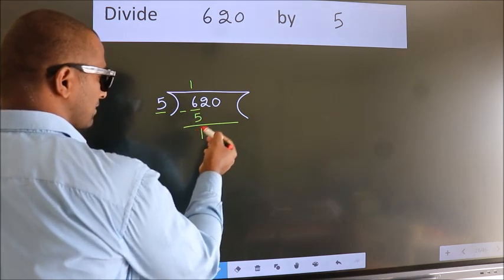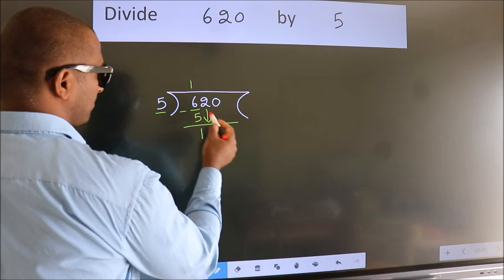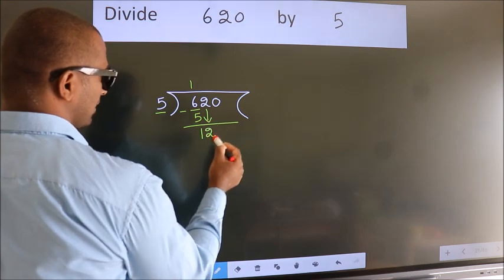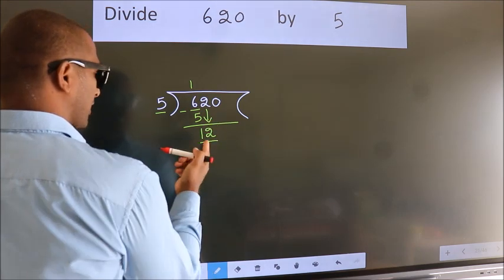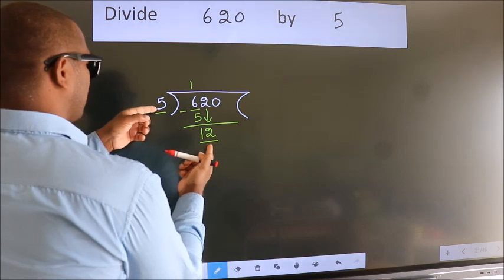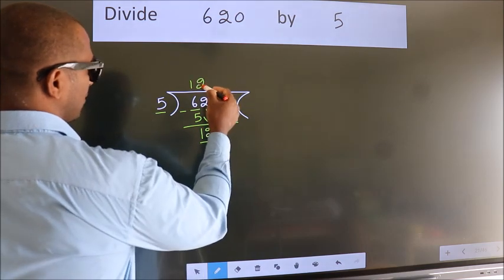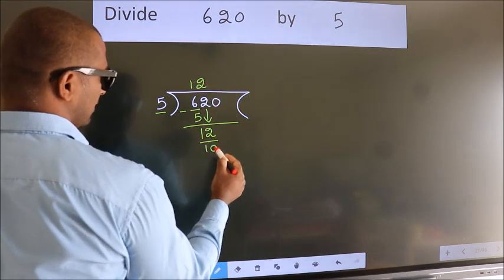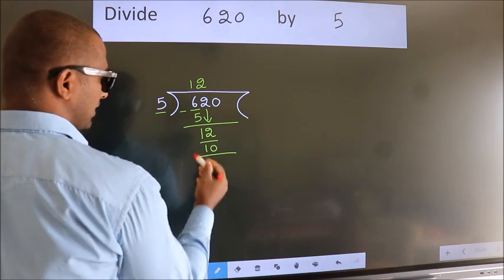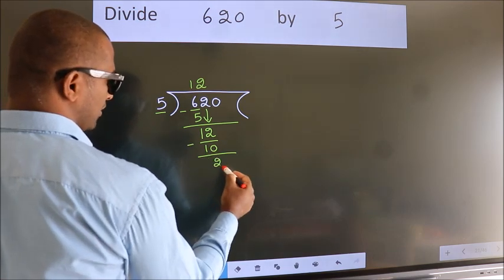After this, bring down the beside number. So 2 down. So 12. A number close to 12 in 5 table is 5 twos 10. Now we subtract. We get 2.